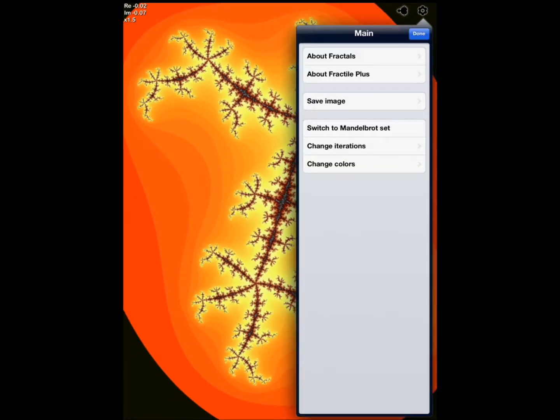You can switch, you can change iterations from slow, fast, to all the way. Obviously, help is available if you need help, you can change colors.